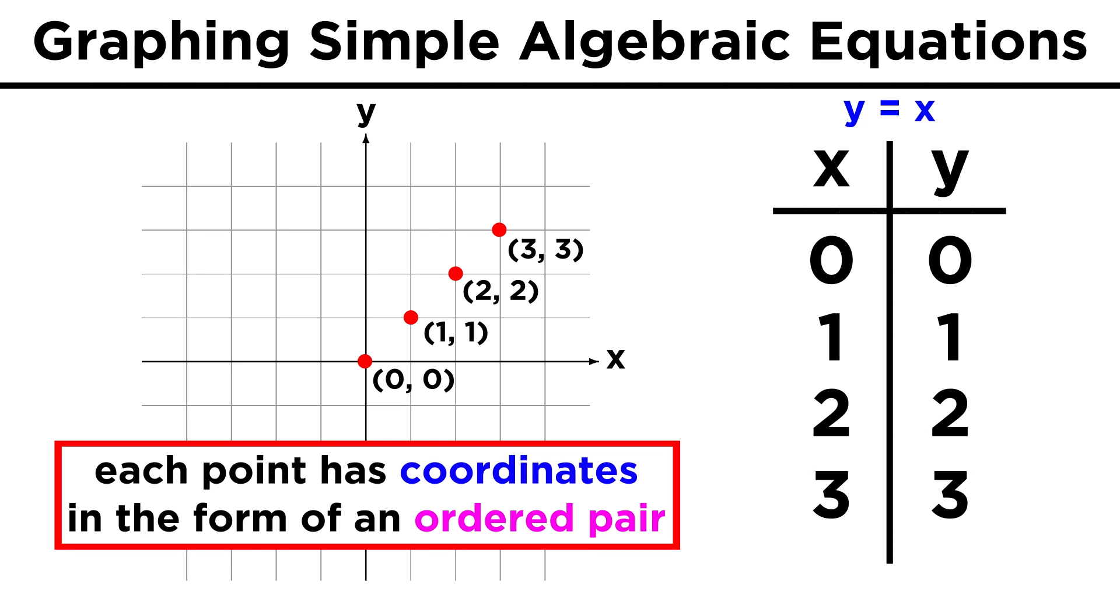Each of these points can be described with coordinates called ordered pairs. These can be represented as a pair of numbers within parentheses, separated by a comma. That means two comma two will correspond with this point, and we always list the x value first, followed by the y value.